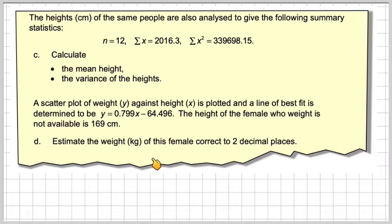The height of the female whose weight is not available is 169. And therefore, we're going to estimate her weight, giving our answer correct to two decimal places.